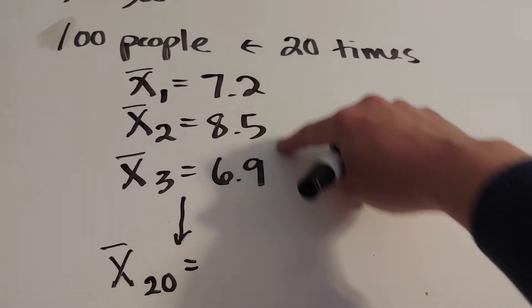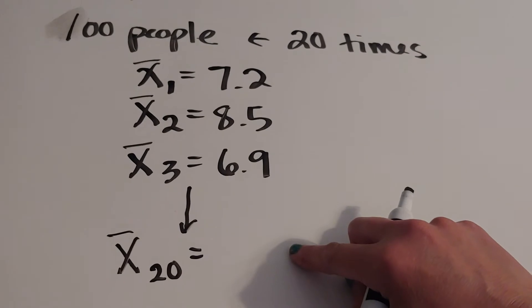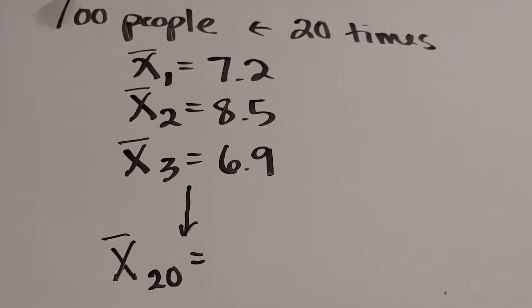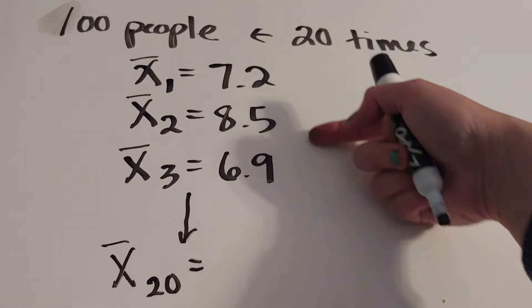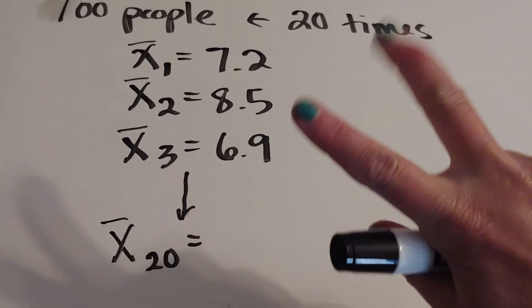And we're also not going to get a bunch of people that had 50 shows. Unless I interview 100 people and they all say 50, then that average would be 50. So what happens is that these averages are going to be more normal and in the middle.